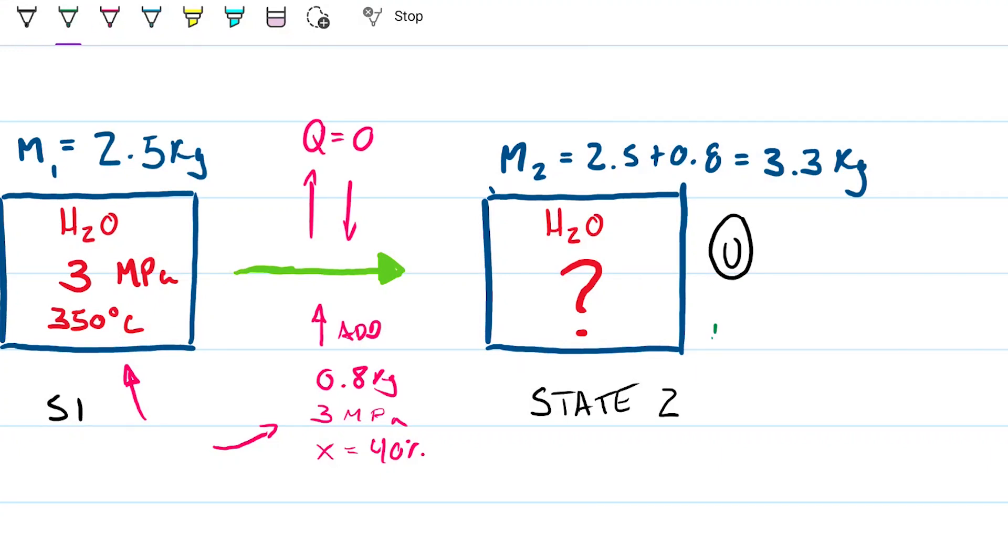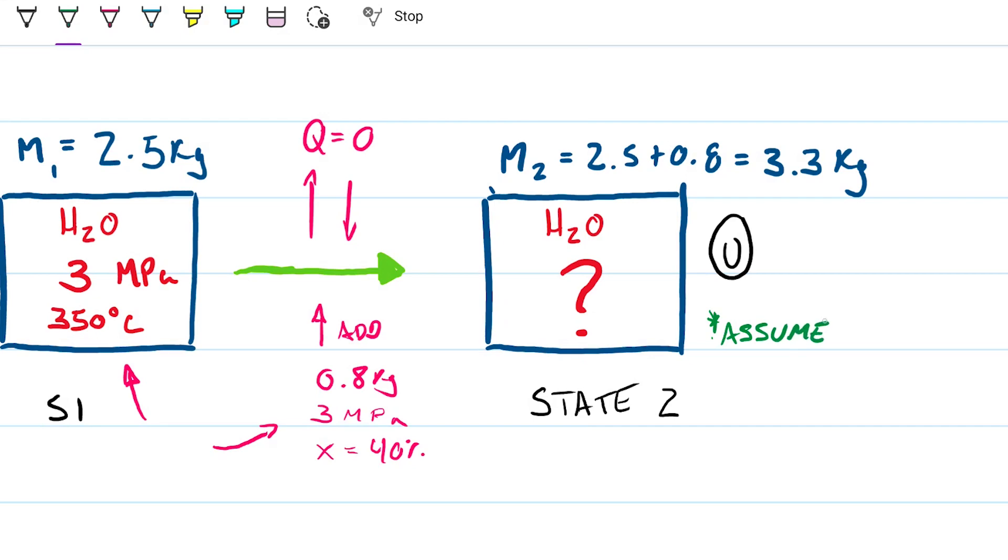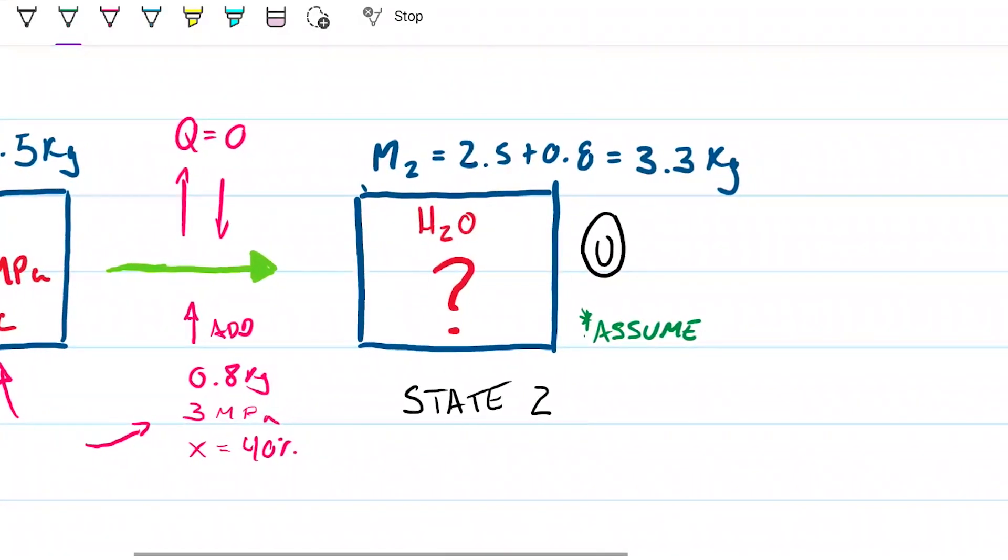And then that doesn't really give us much space to find additional properties. So I'm going to assume that because I'm mixing two things, two streams of water of three megapascals, that the pressure two would also be three megapascals. And I'm going to use that assumption in combination with this internal energy that I'm going to calculate to be able to define the state completely.